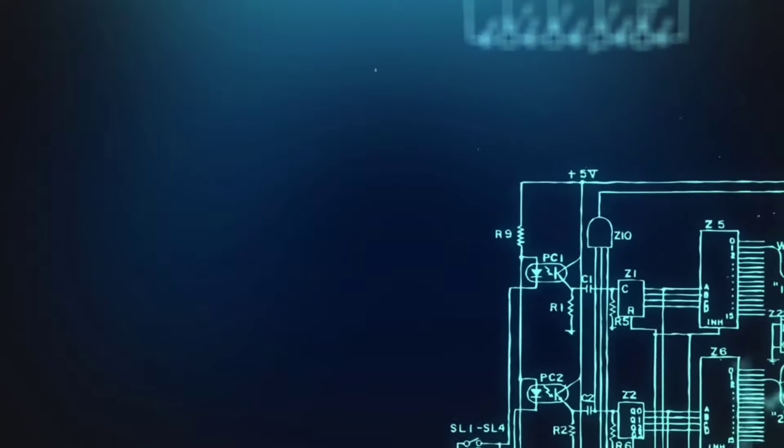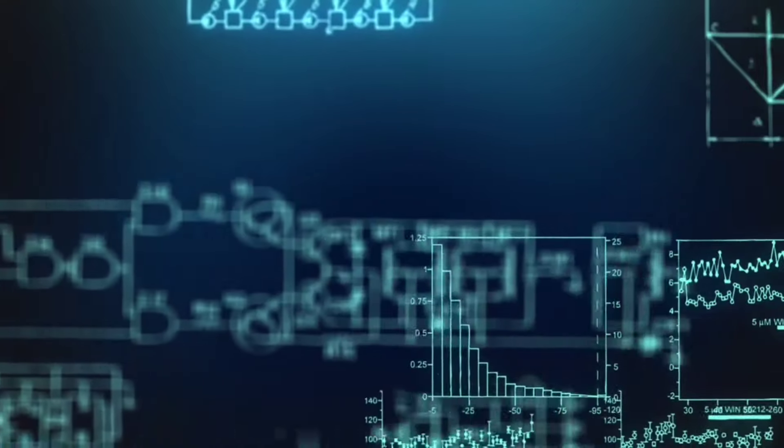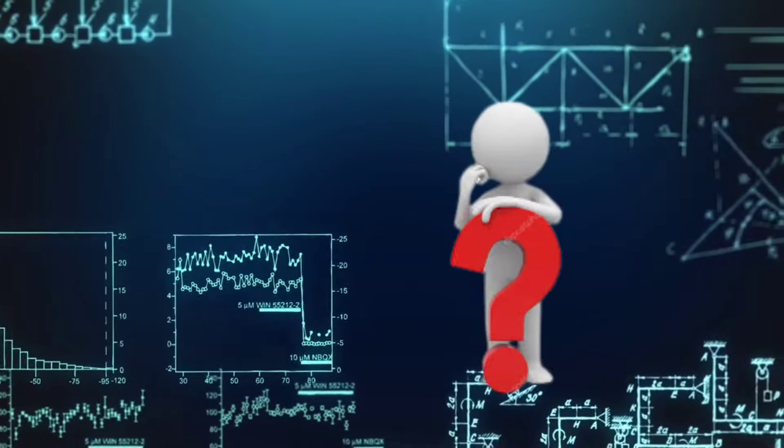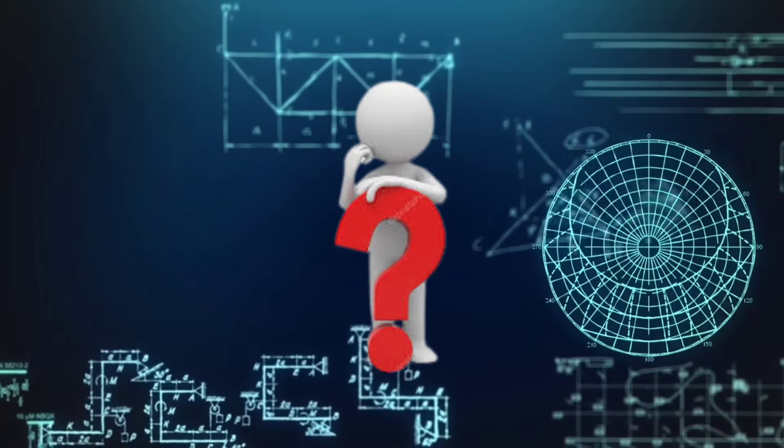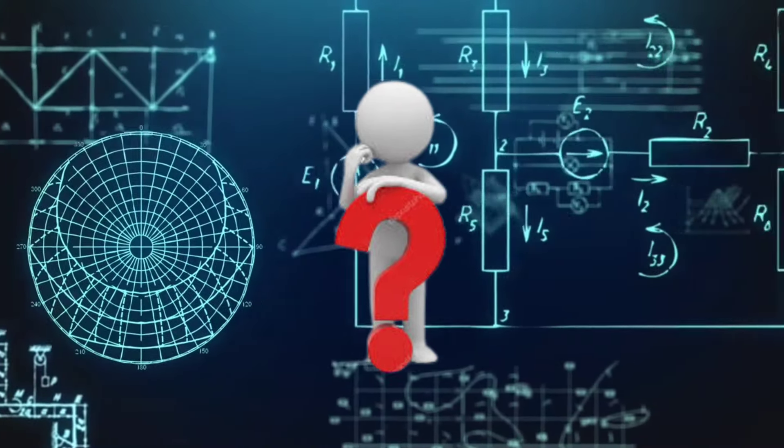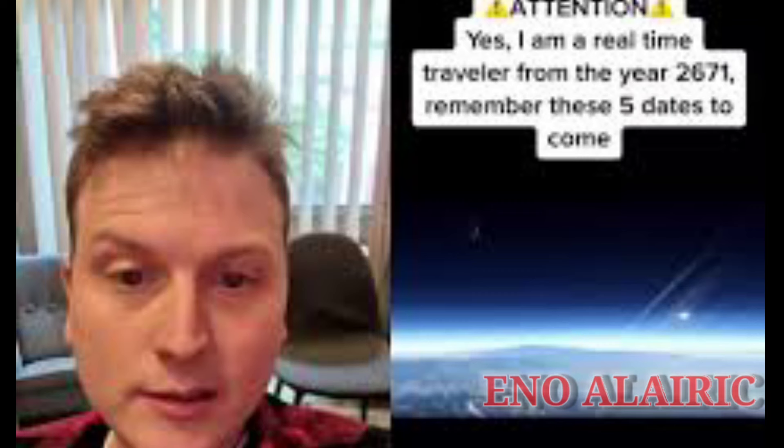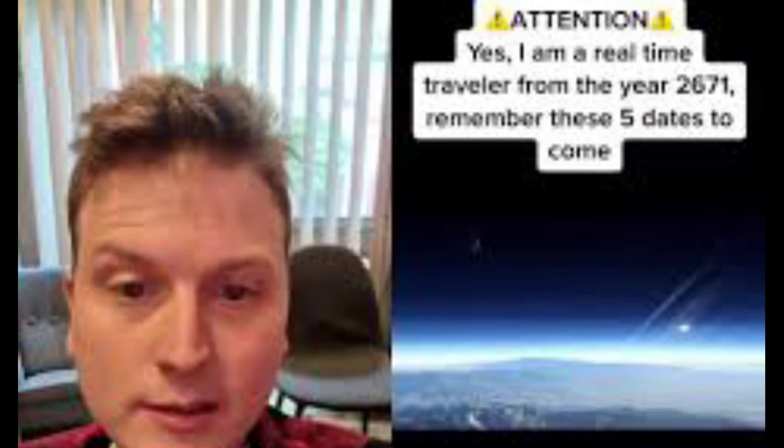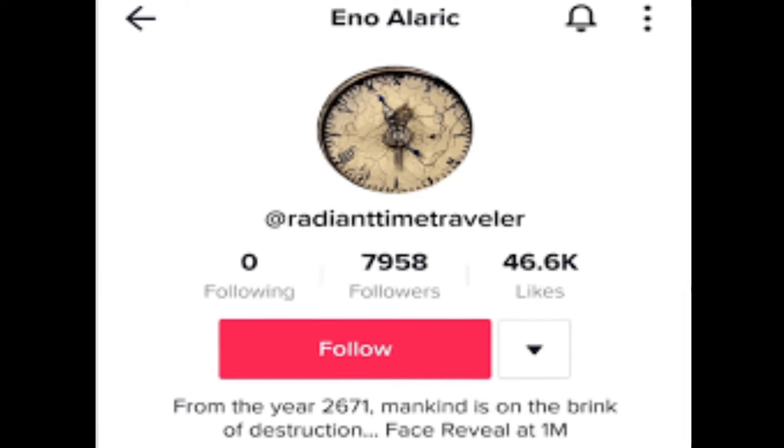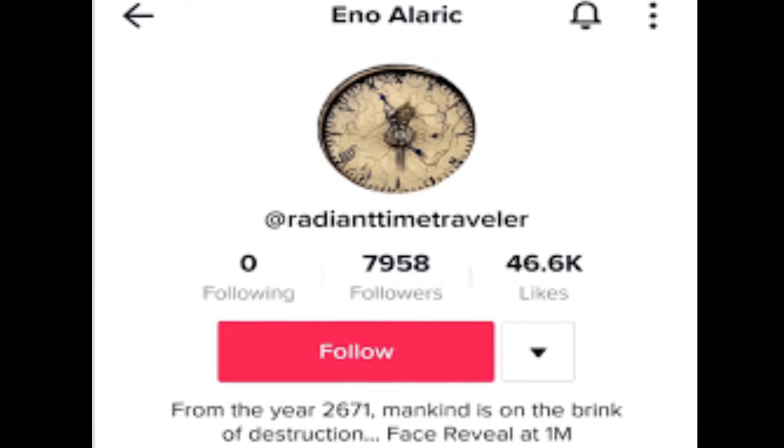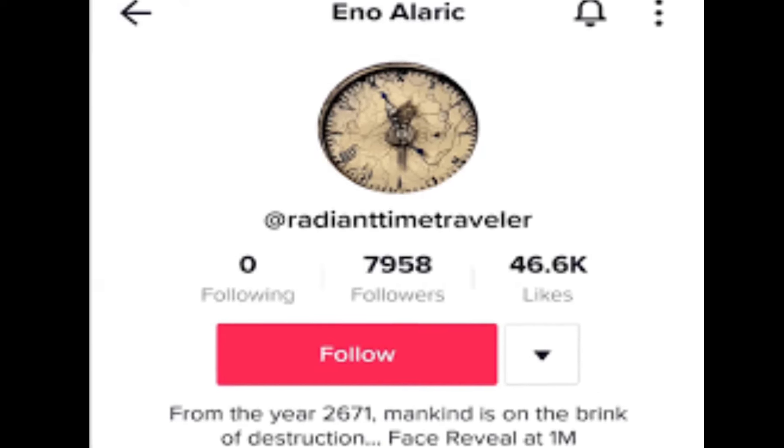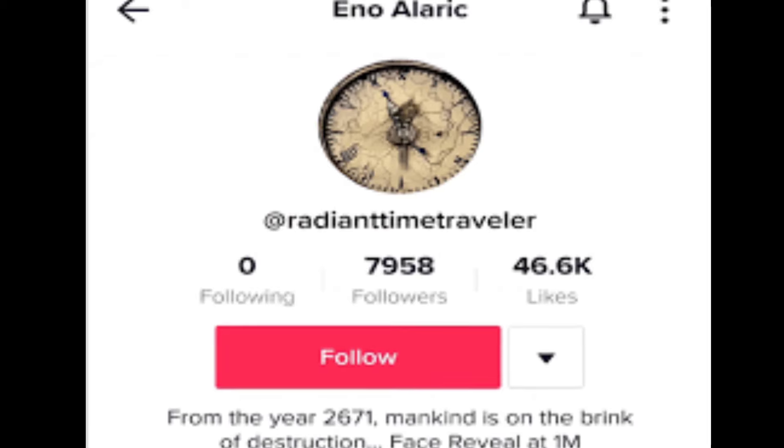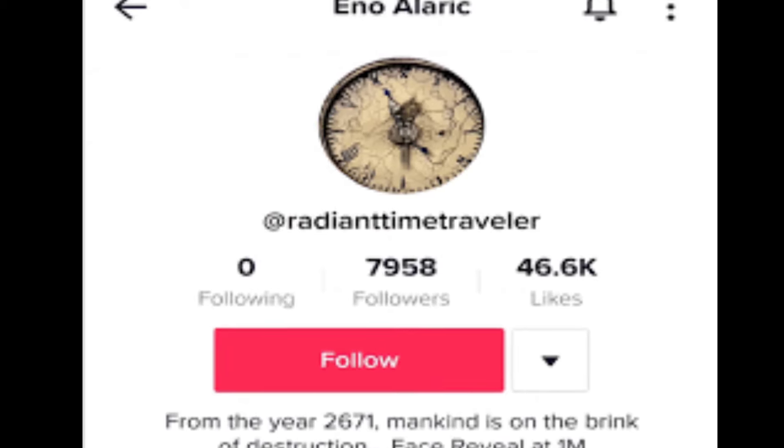Now come to the actual point: who is the time traveler and what are the time traveler's future predictions? The time traveler is identified as Eno Alaric, who recently uploaded a video on TikTok and has issued five warnings for five catastrophic events that will seemingly change the fate of earth.